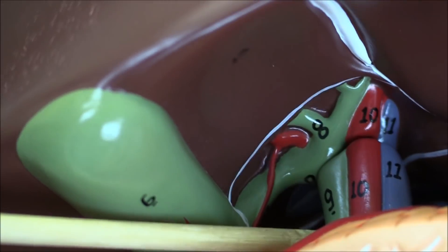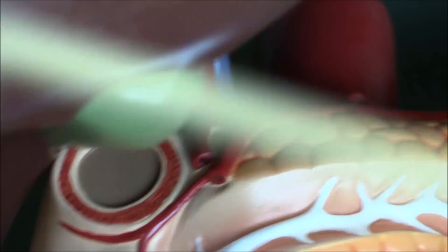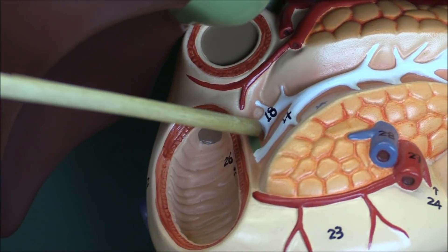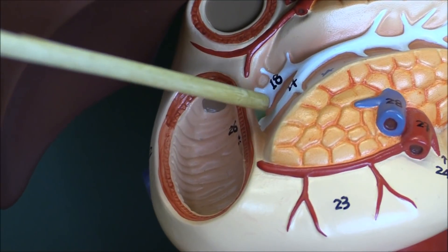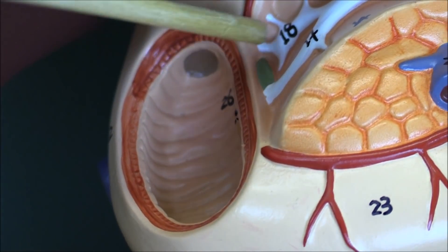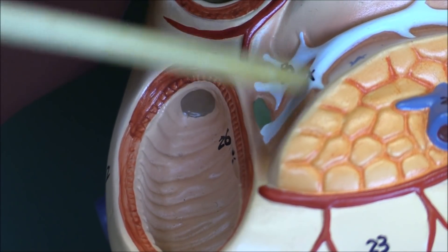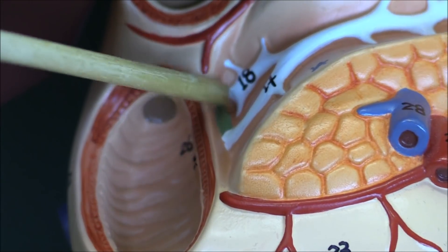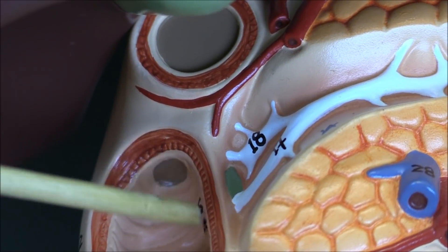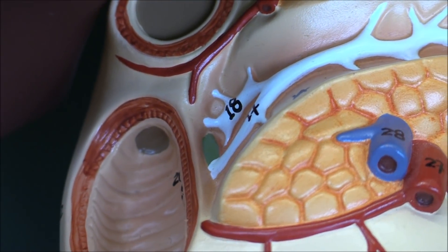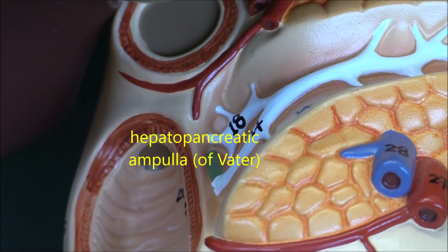The bile travels down through the cystic duct and down the common bile duct. The common bile duct actually passes through the tissue of the pancreas, where the bile ducts coming from the gallbladder meet up with the pancreatic duct. This final area where the ducts join is called the ampulla — in older terminology, the ampulla of Vater.